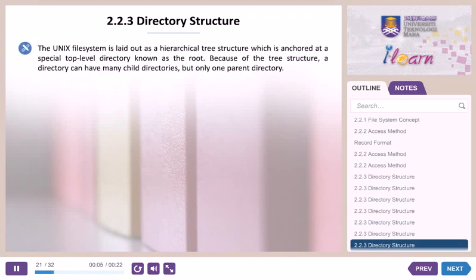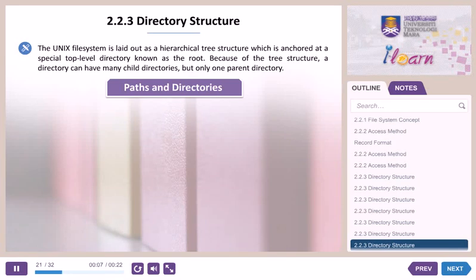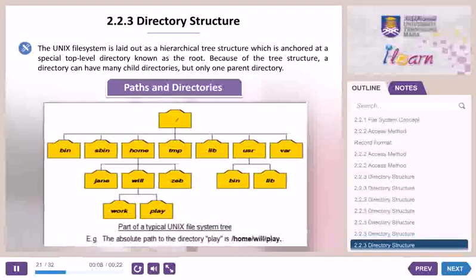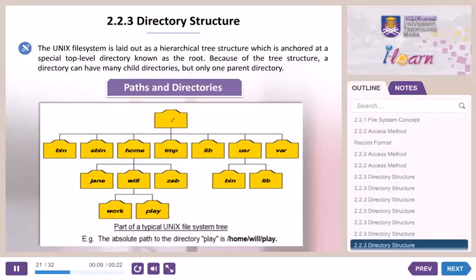Paths and directories. The Unix file system is laid out as a hierarchical tree structure anchored at a special top-level directory known as the root. Because of the tree structure, a directory can have many child directories, but only one parent directory.